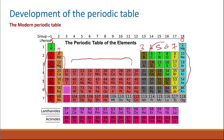The group number tells you the number of electrons in the outer shell. All elements in Group 1 have one electron in their outer shell; Group 2 have two, and so on. Group 0 contains the noble gases — non-reactive elements with a complete outer shell. They all have 8 electrons in their outer shell, with the exception of helium, which has only one electron shell with a maximum capacity of 2 electrons. All Group 0 elements are inert because they have a full outer shell, so they have no tendency to lose or gain electrons.